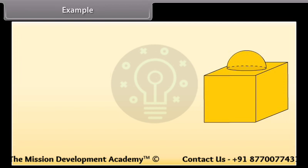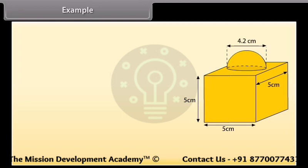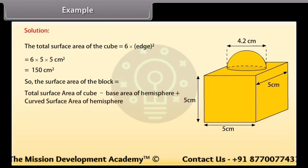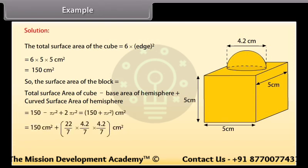This decorative block is made of two solids — a cube and a hemisphere. The base is a cube with edge 5 cm, and the hemisphere fixed on top has a diameter of 4.2 cm. Find the total surface area of the block. The total surface area of the cube = 6 × 5² = 150 cm². Since the part where the hemisphere is attached is not included, the surface area of the block = total surface area of cube − base area of hemisphere + curved surface area of hemisphere = 163.86 cm².